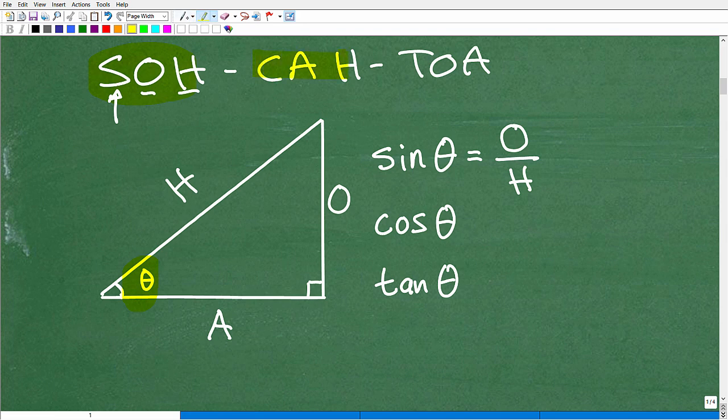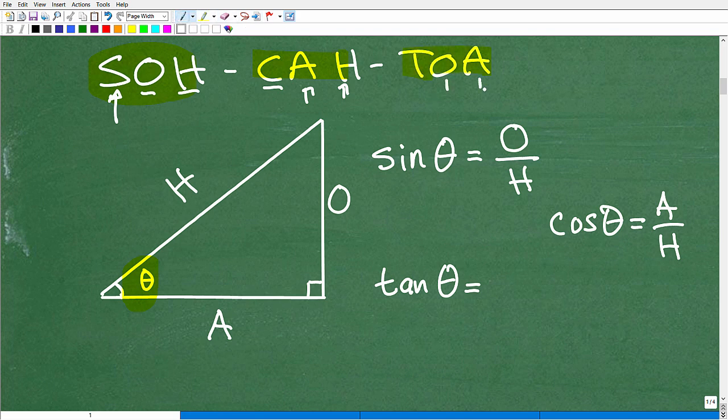How about cosine? So cosine is the adjacent over the hypotenuse. So let's give ourselves more room. Let's put cosine over here. Cosine, that little thing is called theta, is the adjacent over the hypotenuse. And then tangent, here, this is called the tangent, is going to be, you guessed it, the opposite over the adjacent. So O over A.